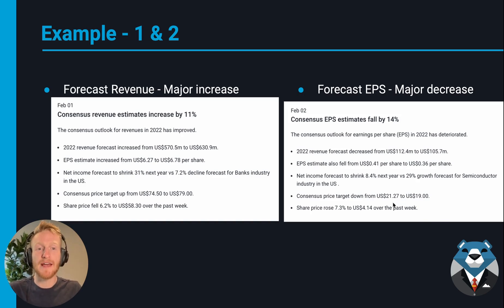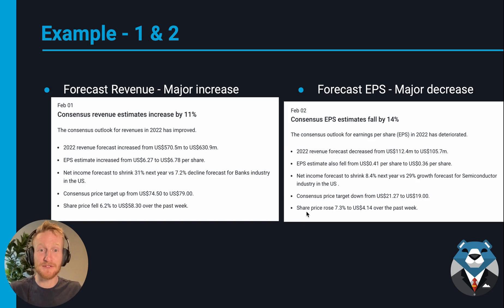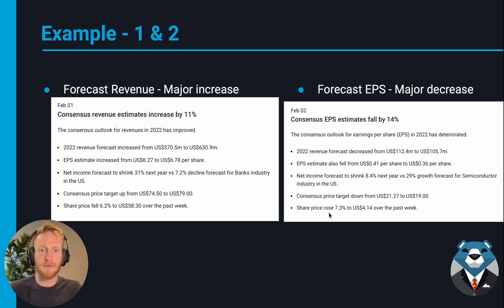The consensus price target is down from $21 to $19, as analysts determined that the revised lower estimates for earnings and revenue justified a decrease in the price target. Interestingly though, the share price actually rose 7.3% to $4.14 over the past week — a big difference from the consensus price target. So even with a decrease in estimates, the market bid up the price, which doesn't seem too correlated with the change in estimates.